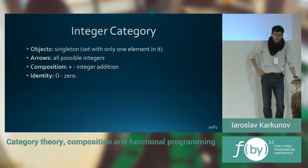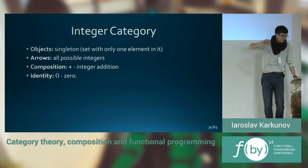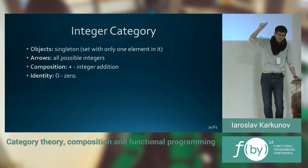Integer category. Integer category consists of the singleton. By singleton, I mean the set with one element inside it. It's just a dot. And the arrows there will be all possible integers. Composition is addition of integers. And identity for that singleton object is zero integer.